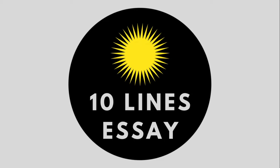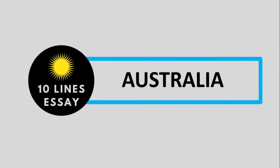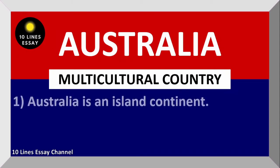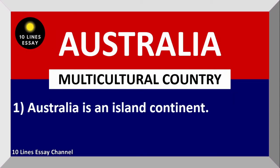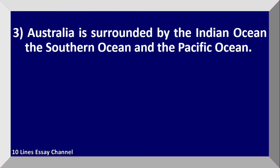Hello everyone, welcome to my channel. This video is about Australia. Australia is an island continent and it is the smallest continent. Australia is surrounded by the Indian Ocean, the Southern Ocean, and the Pacific Ocean.